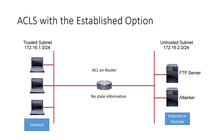One of the challenges you face using ACL is that they do not maintain state information. One of the tools that can be used to help determine if the traffic is originating externally, or if it's returned traffic that was originated internally, is the establishment bit. The established option looks to see if the bit is set and thereby is an indicator of where the traffic originated.